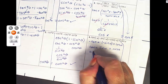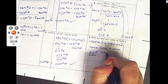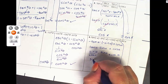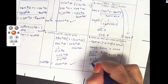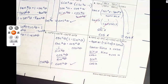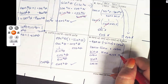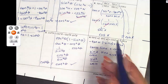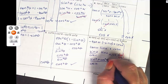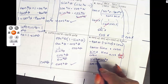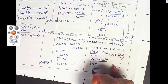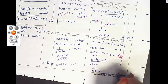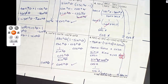Tangent is sine over cosine, so sine times sine gives sine squared. I'll get a common denominator by multiplying by cosine over cosine. Now I have sine squared plus cosine squared — that's u, the angle — over cosine. Sine squared plus cosine squared is one, and one over cosine is the same as secant. That's what I wanted, so I have proved the theorem.